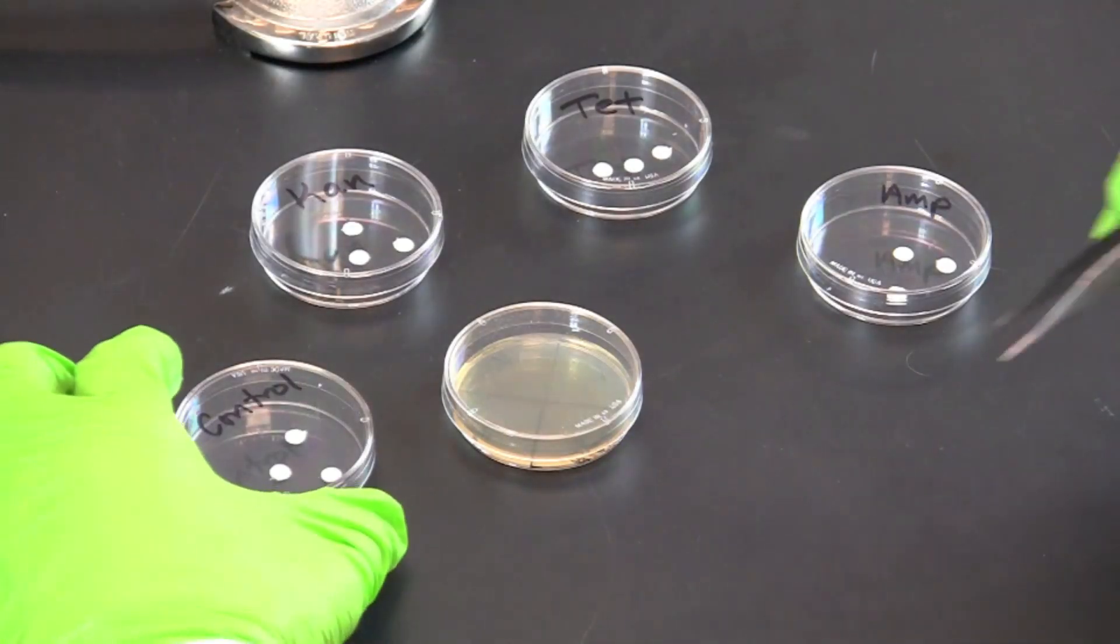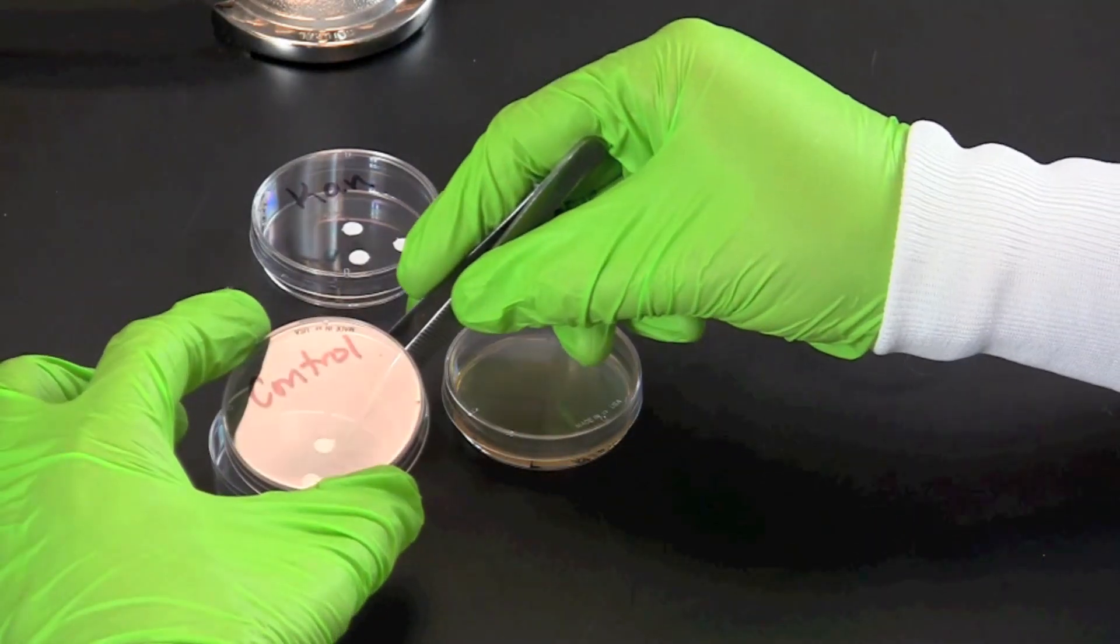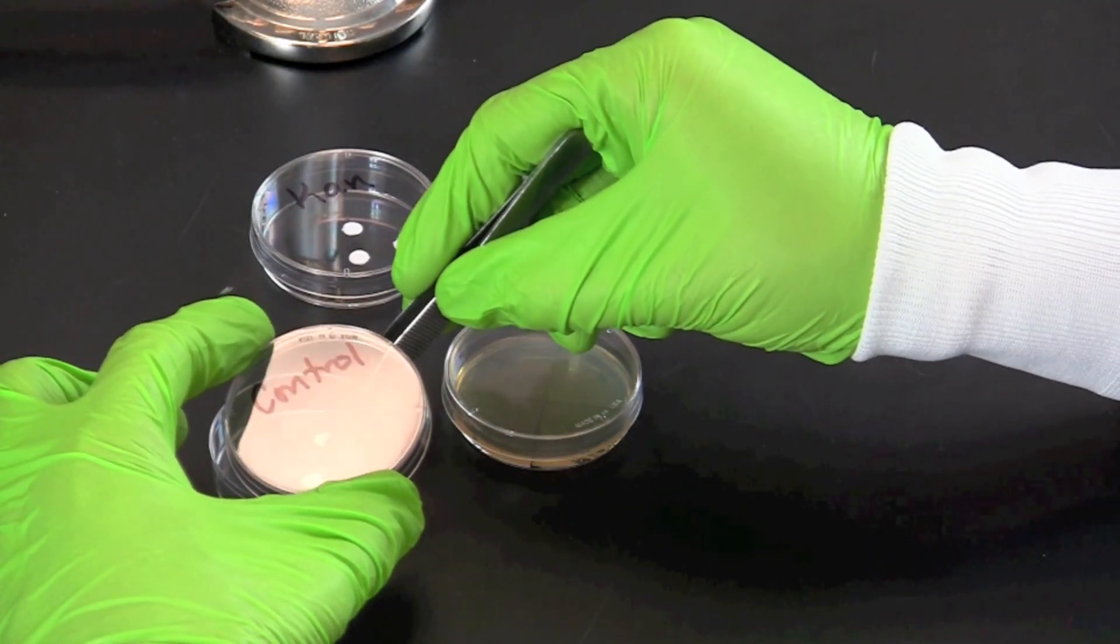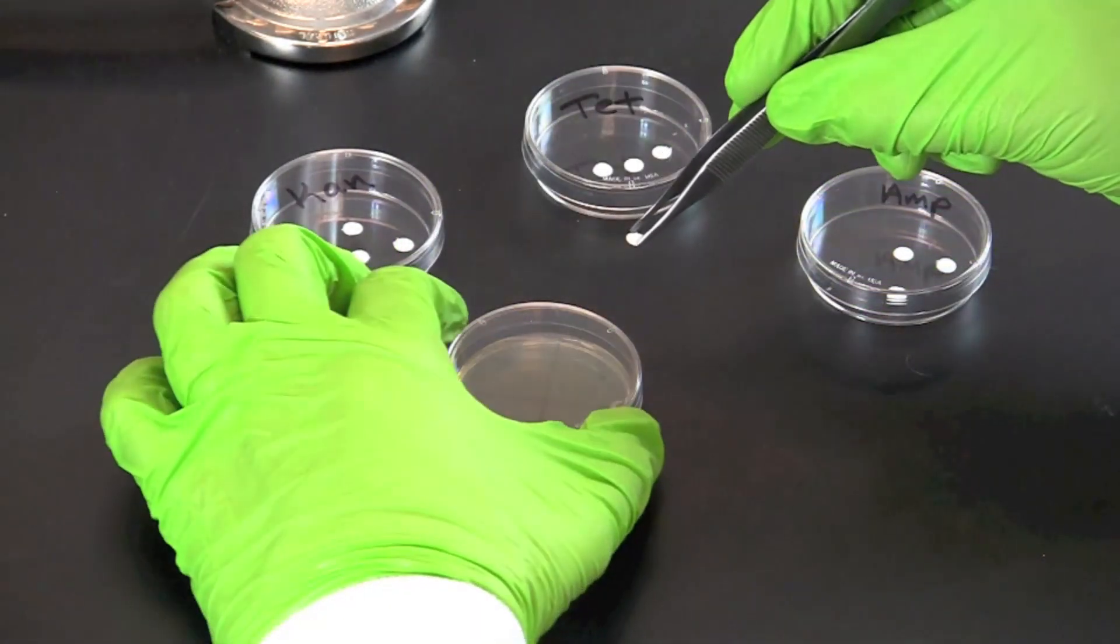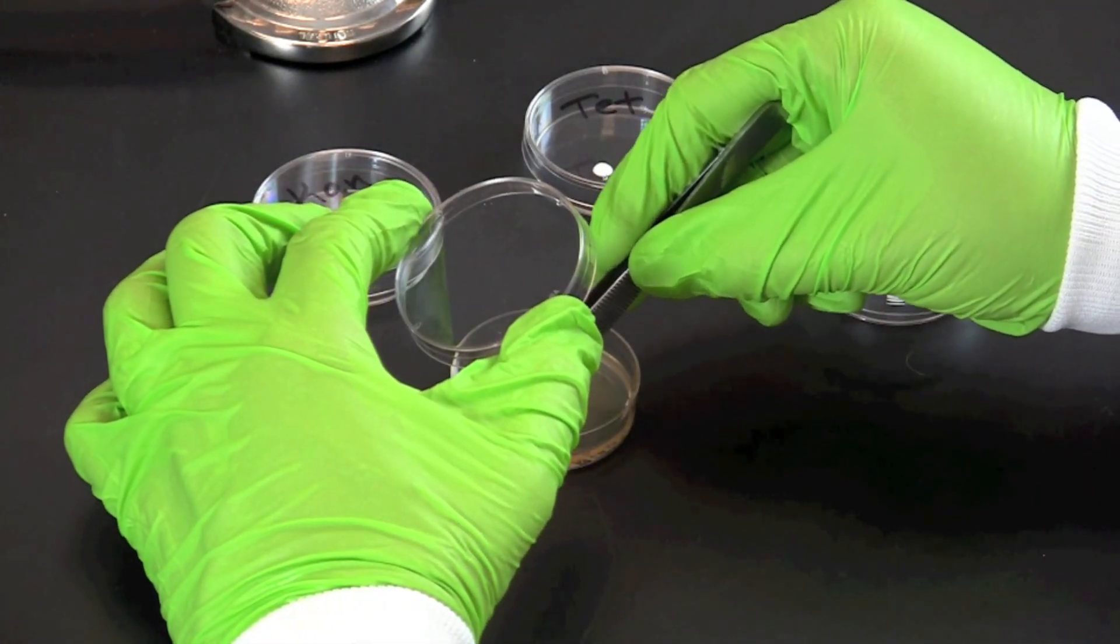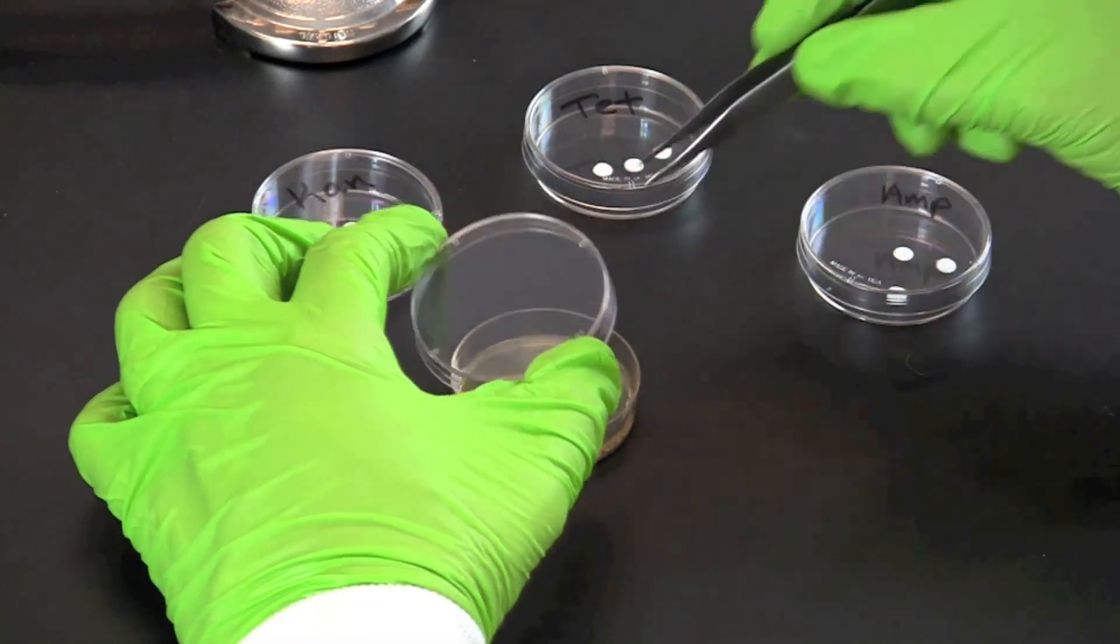Use a sterile pair of forceps to transfer a control disc with no antibiotics to the center of the correct quadrant. Gently press the disc with the forceps to ensure that the disc makes contact with the agar.